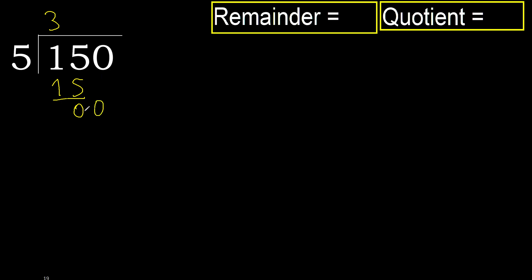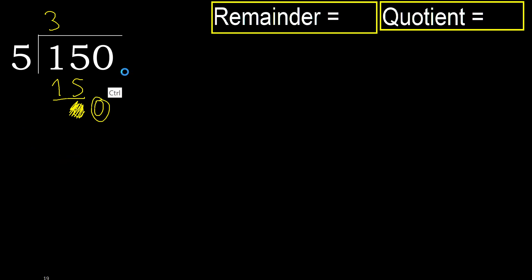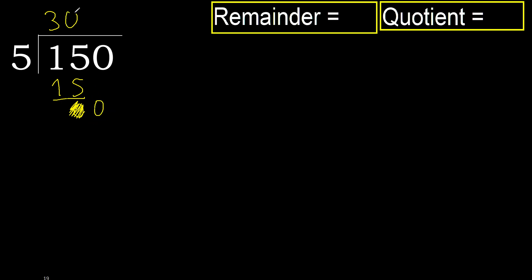Next, eliminate 0 on this side. 0, but 0 is less, therefore next — there is no number. Therefore finish it; finish it with this number. Complete, always complete with 0.